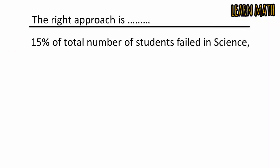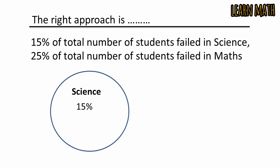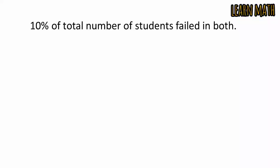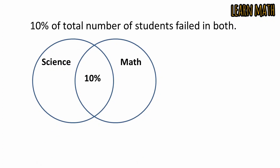The right approach is that 15% of total number of students fail in science. According to the question, 10% of total number of students fail in both. So, 10% are failed in both.